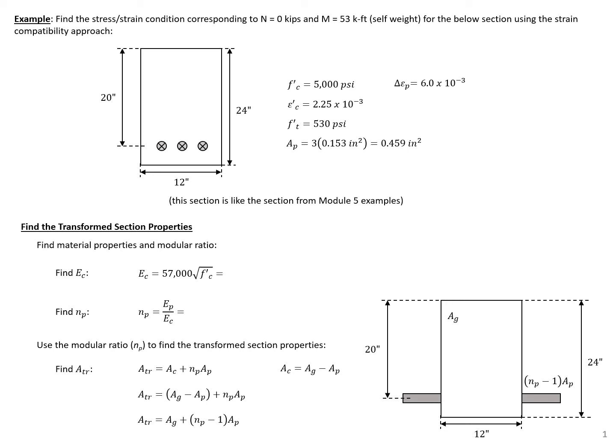In this example problem, we're going to find the stress and strain condition corresponding to a given axial load of zero kips and a given moment of 53 kip-feet, which we'll say is equivalent to the self-weight of this beam for the section shown. We're going to use the strain compatibility approach to find the stresses and strains here.